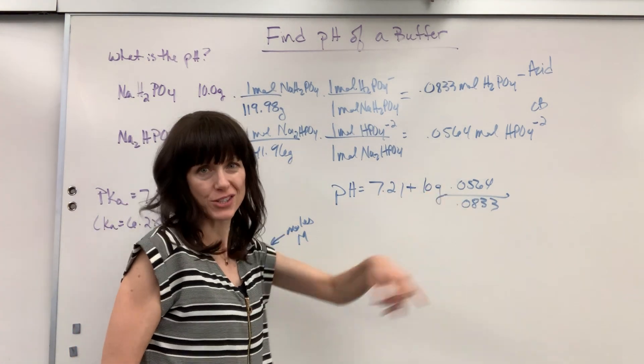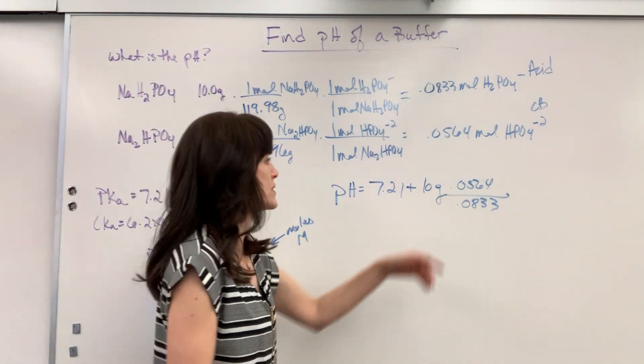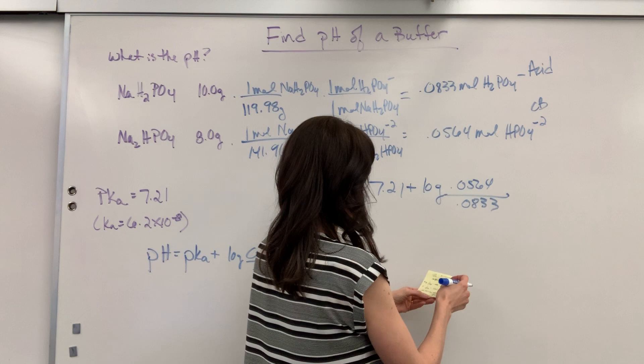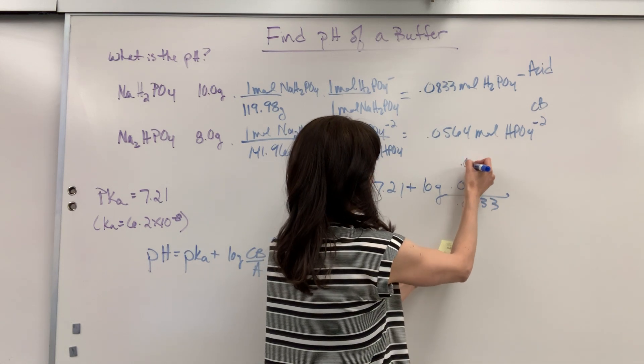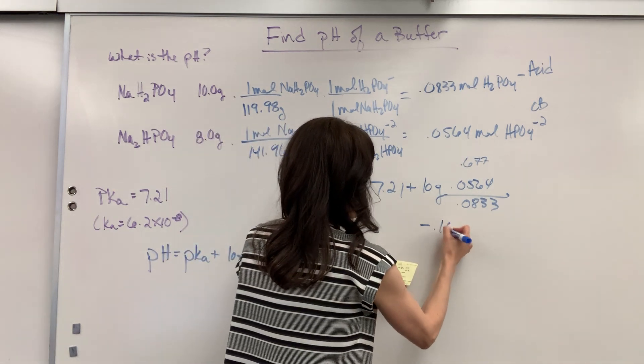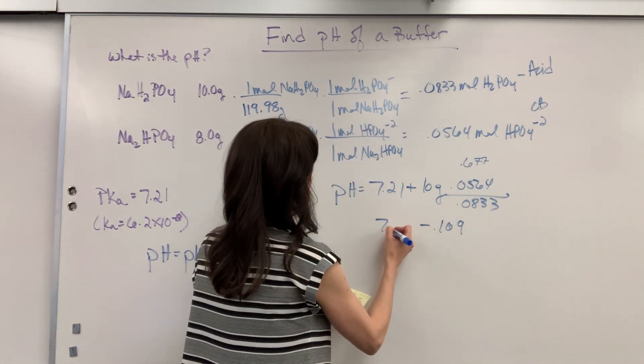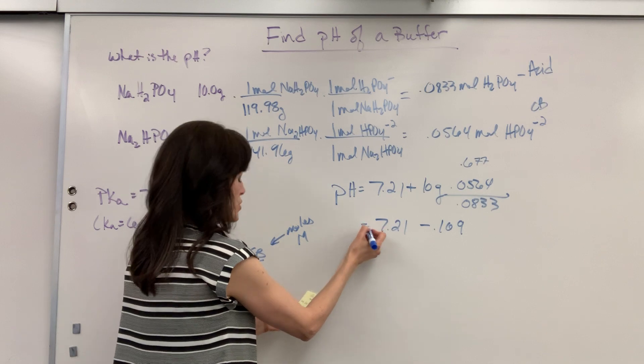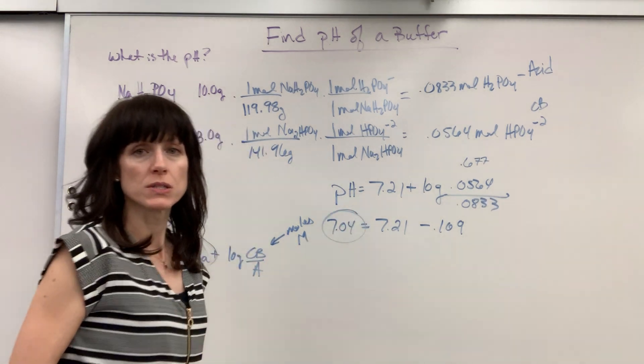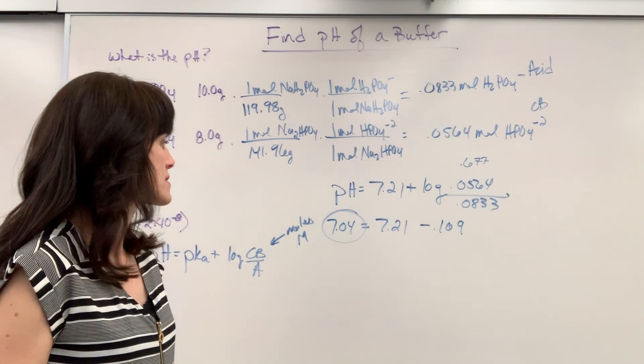And we take the log of a fraction it's always a negative. So if we take this log it is going to give us, just so you know this number right here is 0.677. It's less than one. Take the log it's negative 0.169. And I add that to the 7.21 which gives me a pH of 7.04. Awesome. So there's the pH of that buffer, 7.04.